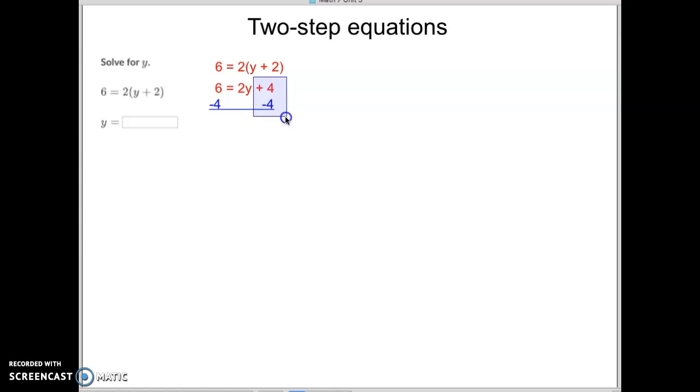What cancels out a positive 4? You hopefully said negative 4. That's right, because a positive 4 and a negative 4, they cancel. And then 6 minus 4 is 2. So what's left over on this side now, after we cancel the 4 out, is we have a 2y left over. And 6 minus 4 is simply 2.